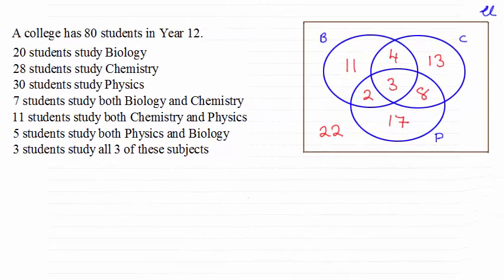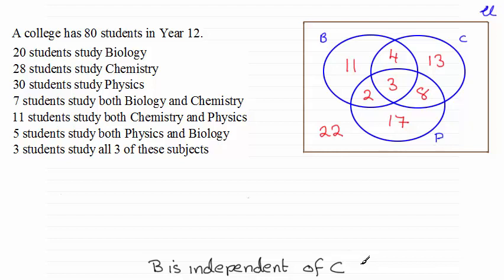Hi. In this last question, we're asked to determine whether studying biology and studying chemistry are statistically independent. It turns out that they are — B is independent of C. To prove this, we need to justify it, and we can do it in several ways. I'll show you those different ways. You might want to fast forward just to quickly view the final solution.